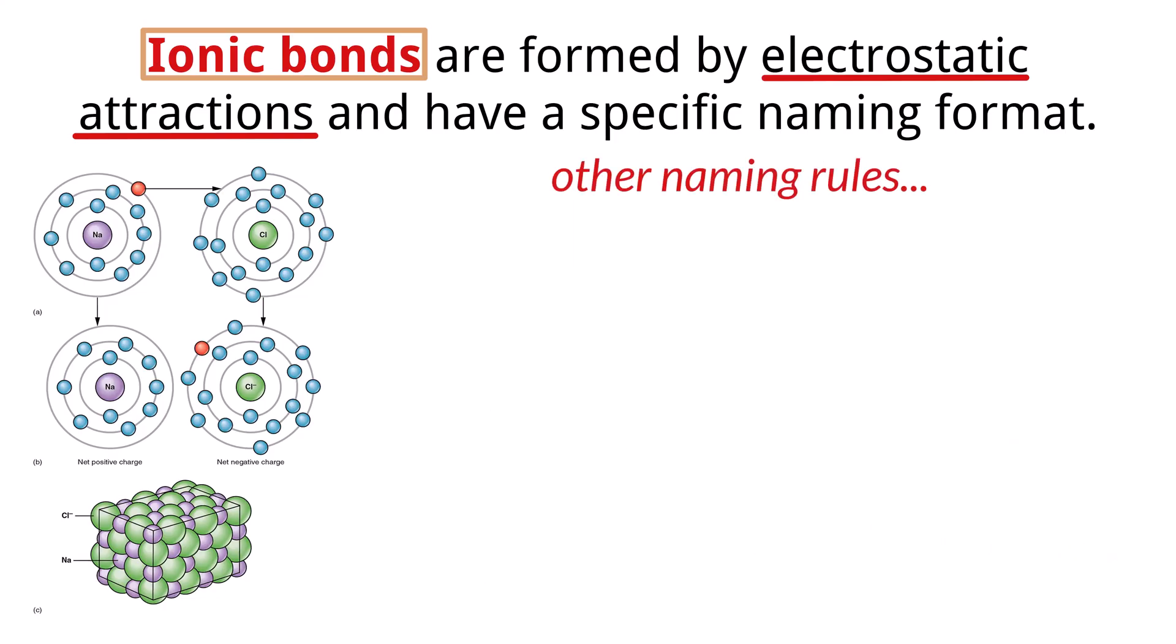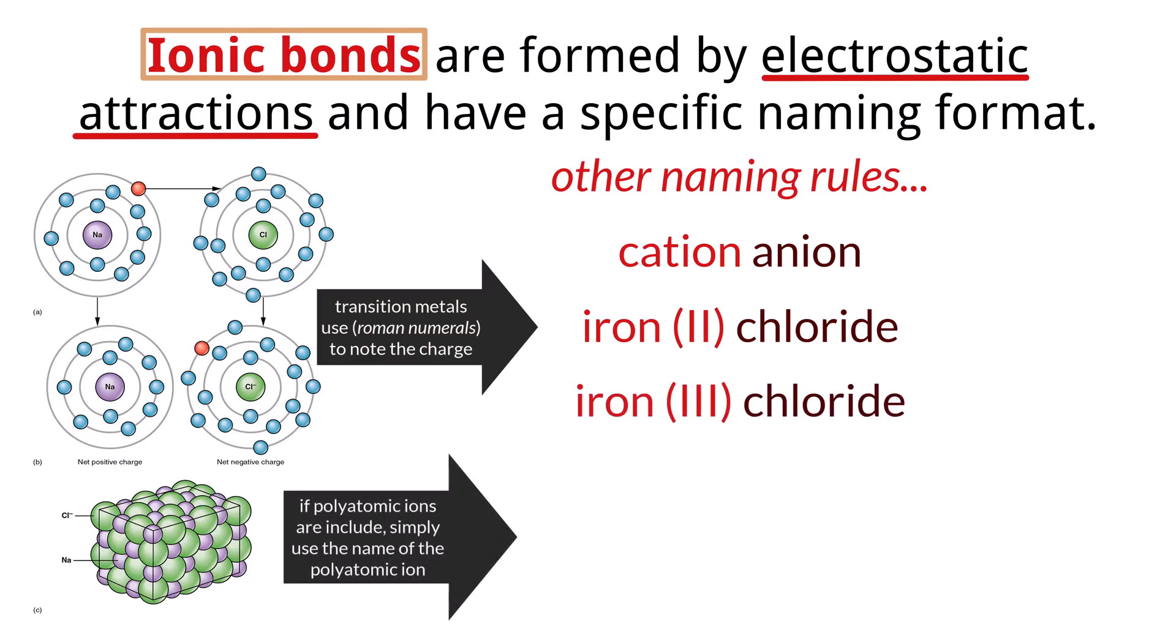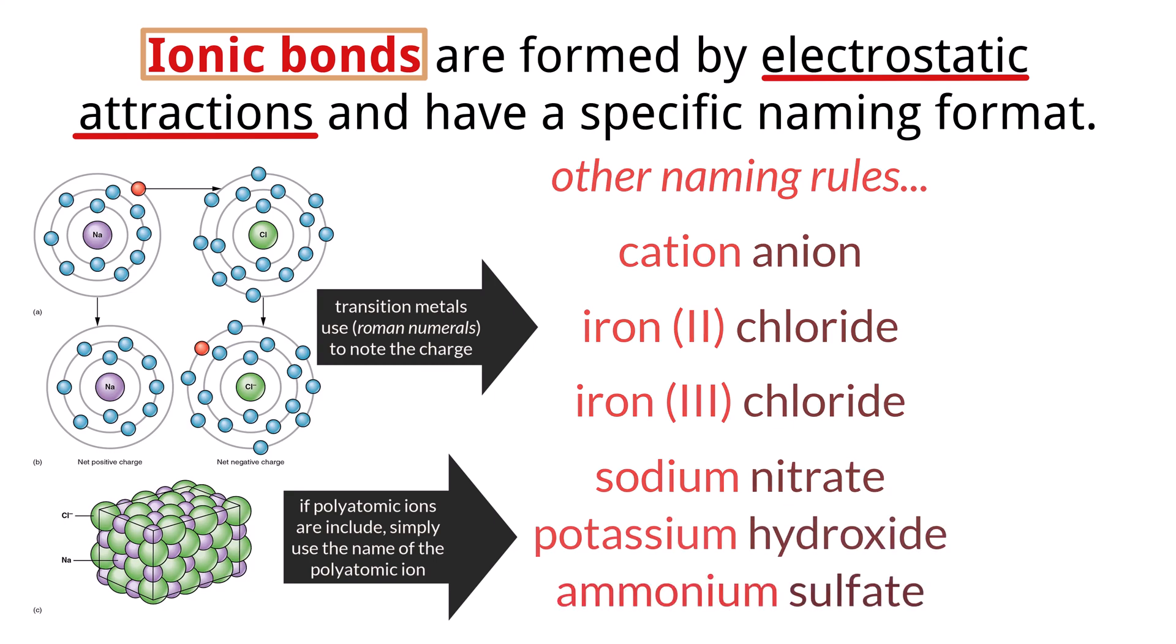Naming ionic compounds containing polyatomic ions follows a similar principle to binary ionic compounds. The name of the cation comes first, followed by the name of the anion. If the cation is a metal that can form ions with different charges, like transition metals, we often use roman numerals in parentheses after the metal's name to indicate its charge. Example, iron 2 chloride or iron 3 chloride. However, for compounds with polyatomic ions, we simply use the name of the polyatomic ion. For example, NaNO3 is sodium nitrate, KOH is potassium hydroxide, and (NH4)2SO4 is ammonium sulfate.